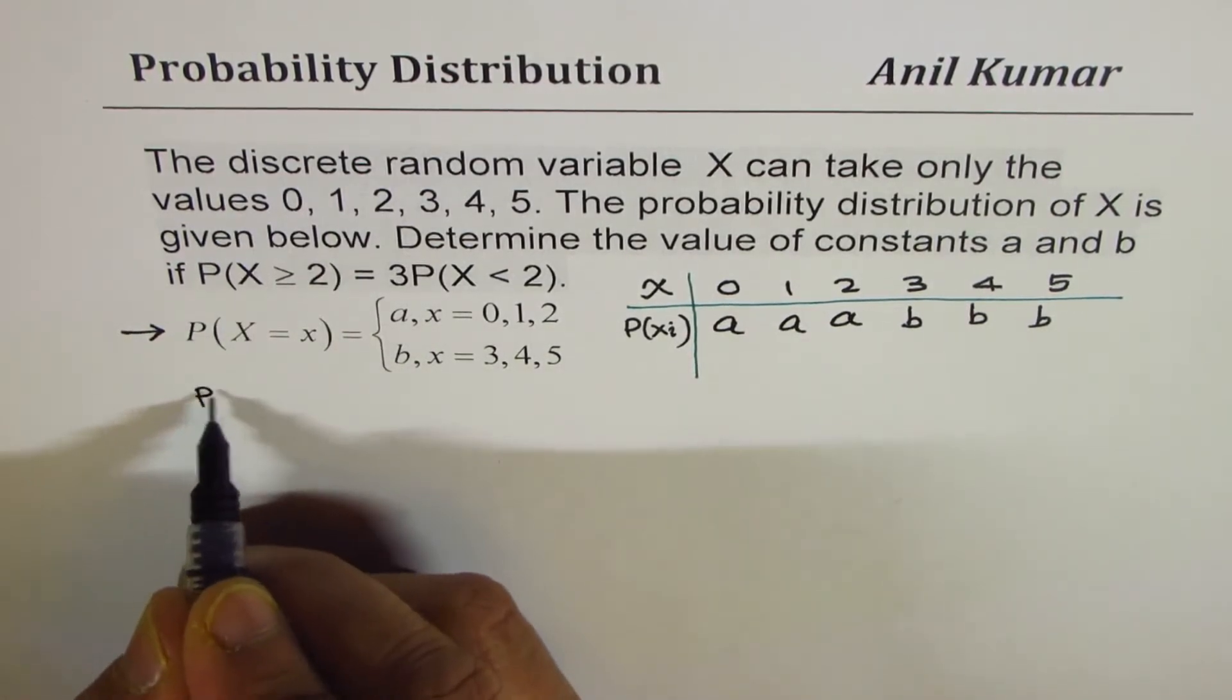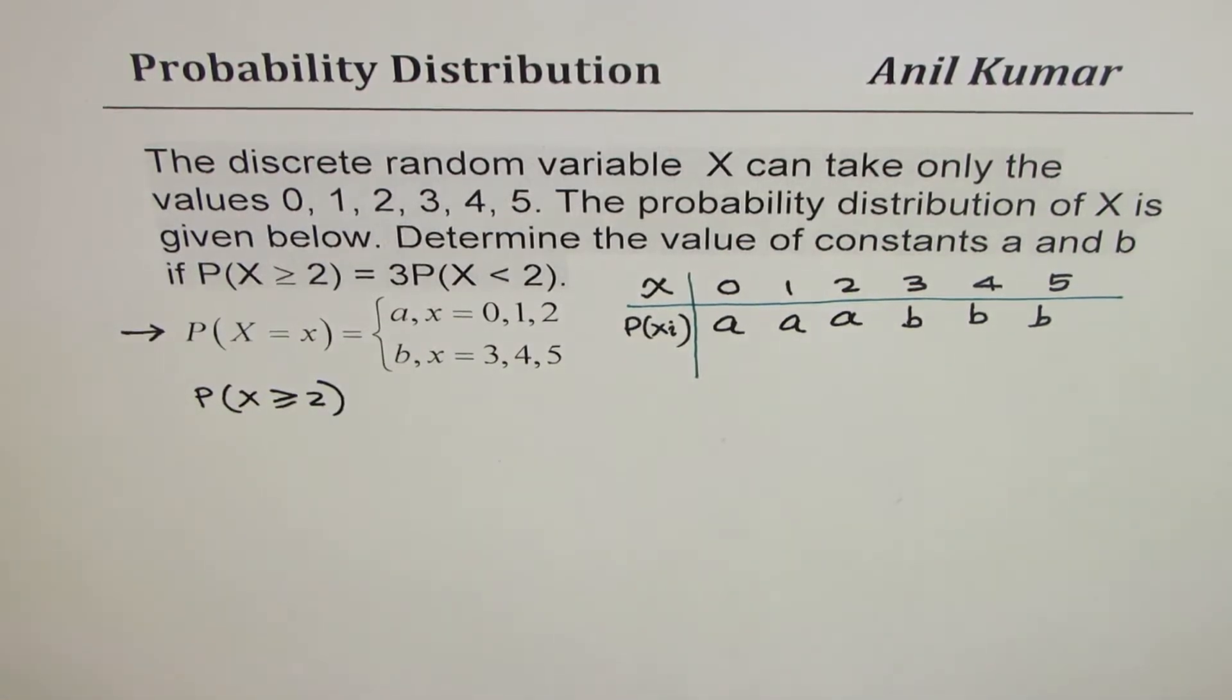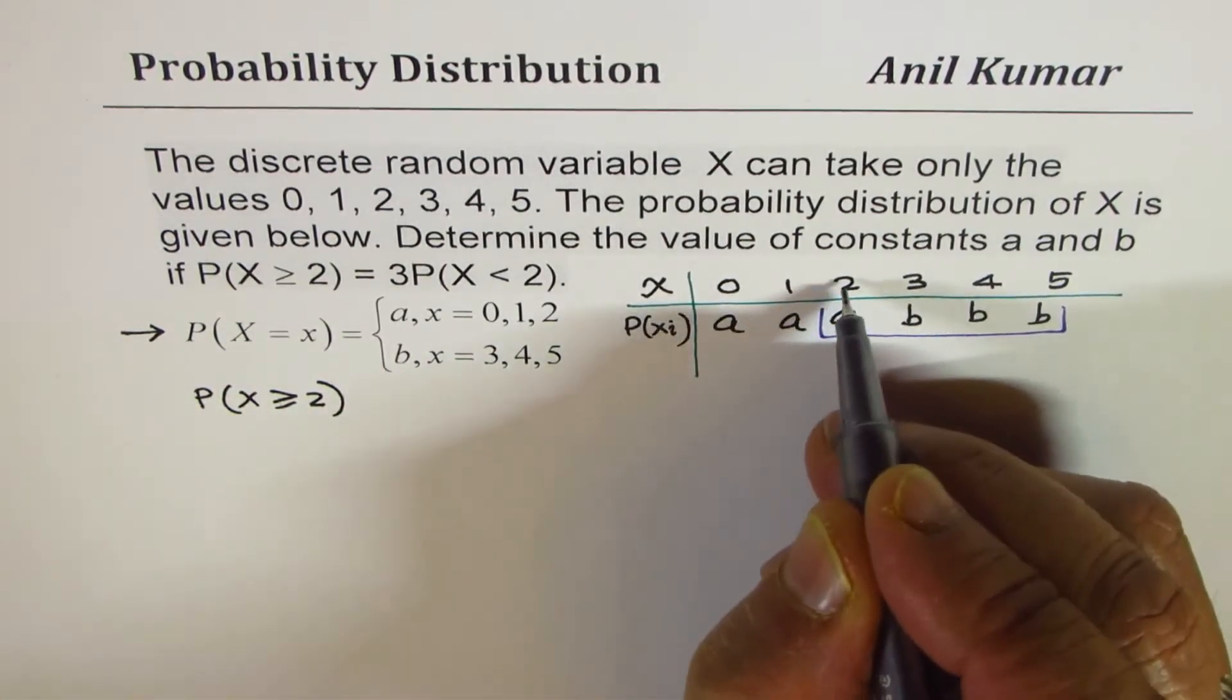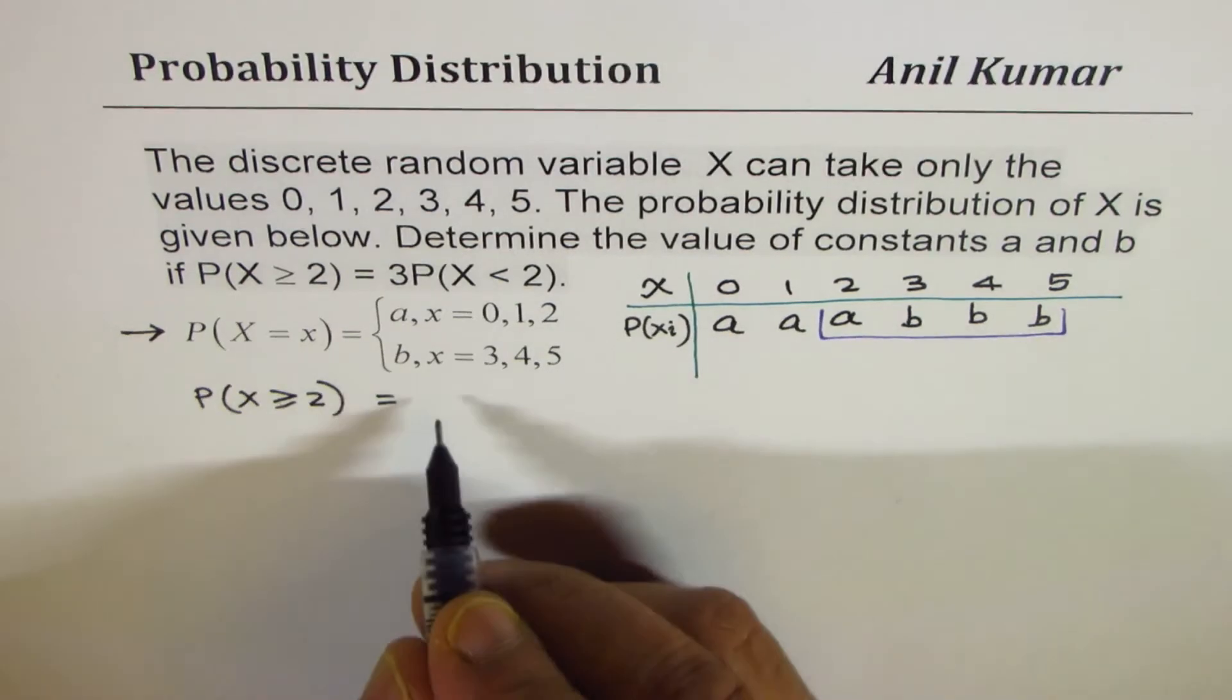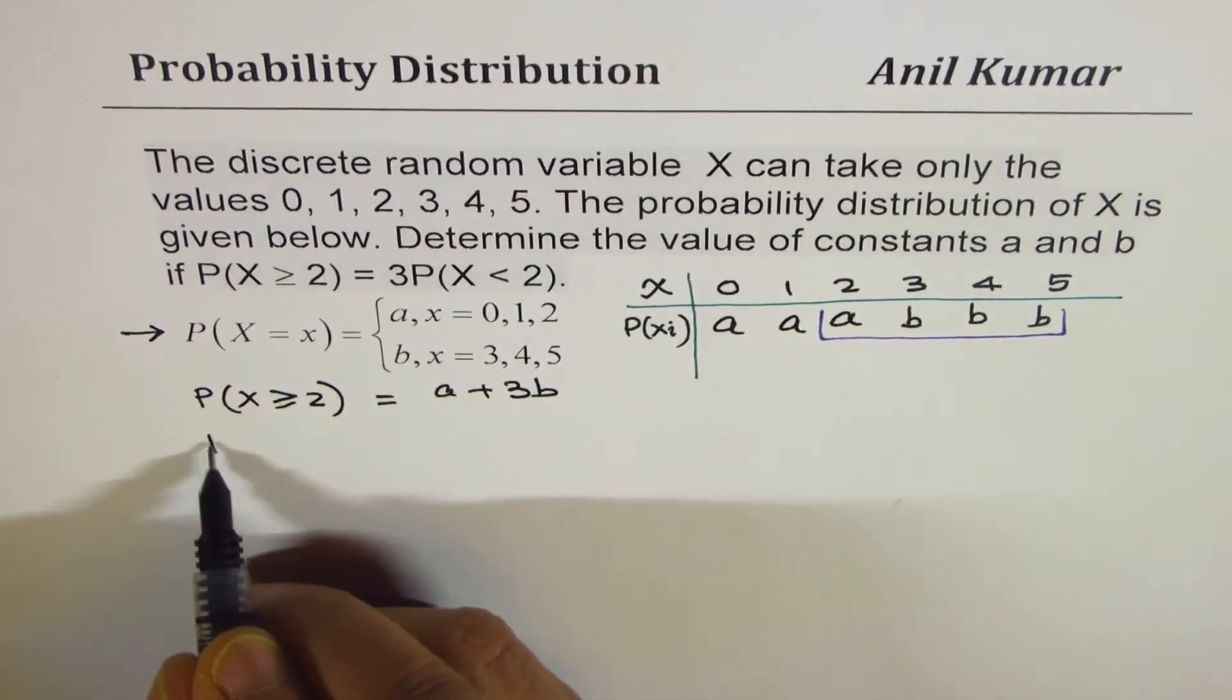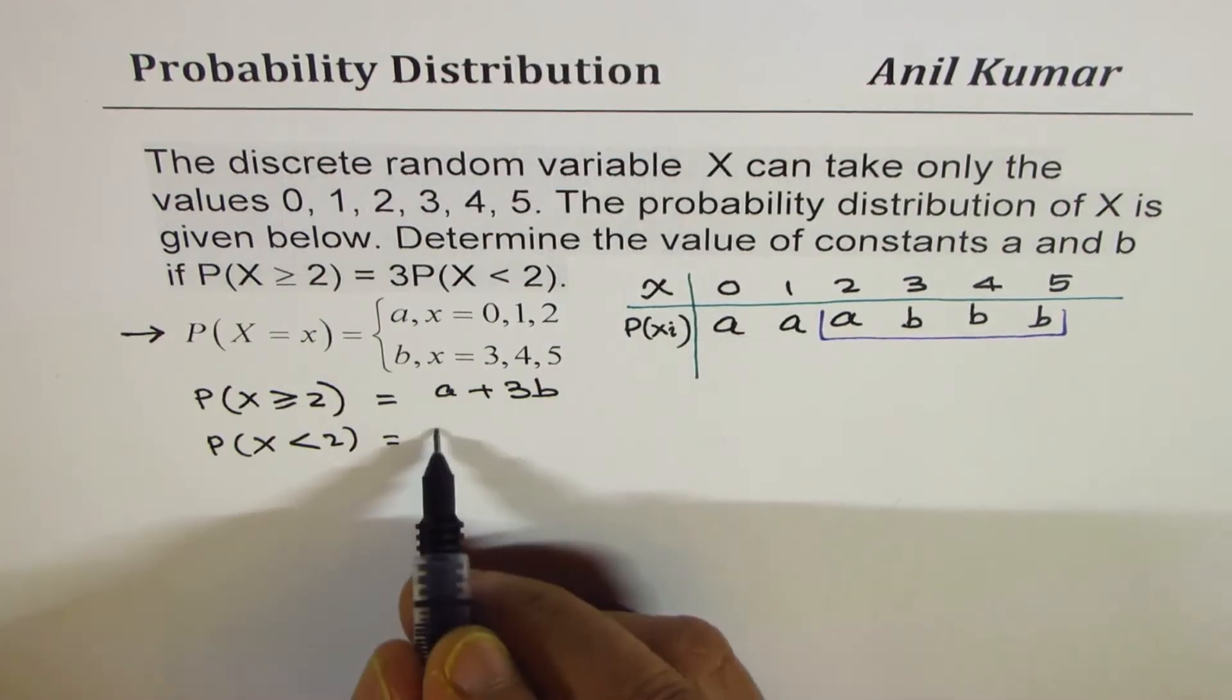Now from this probability distribution you can find what is the probability when X is greater than equal to 2. If X is greater than equal to 2, we're talking about this set. Greater than equal to 2 means 2 included. This probability is a + 3b. And what is the probability for X to be less than 2? That means 0 and 1. The probability is 2a.